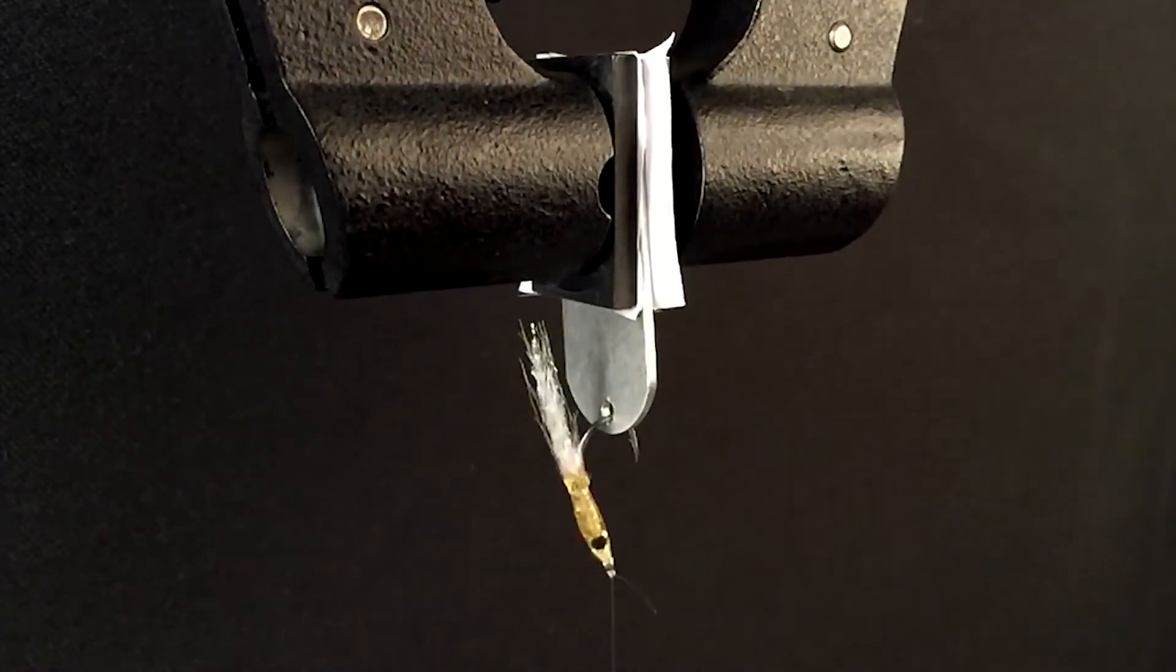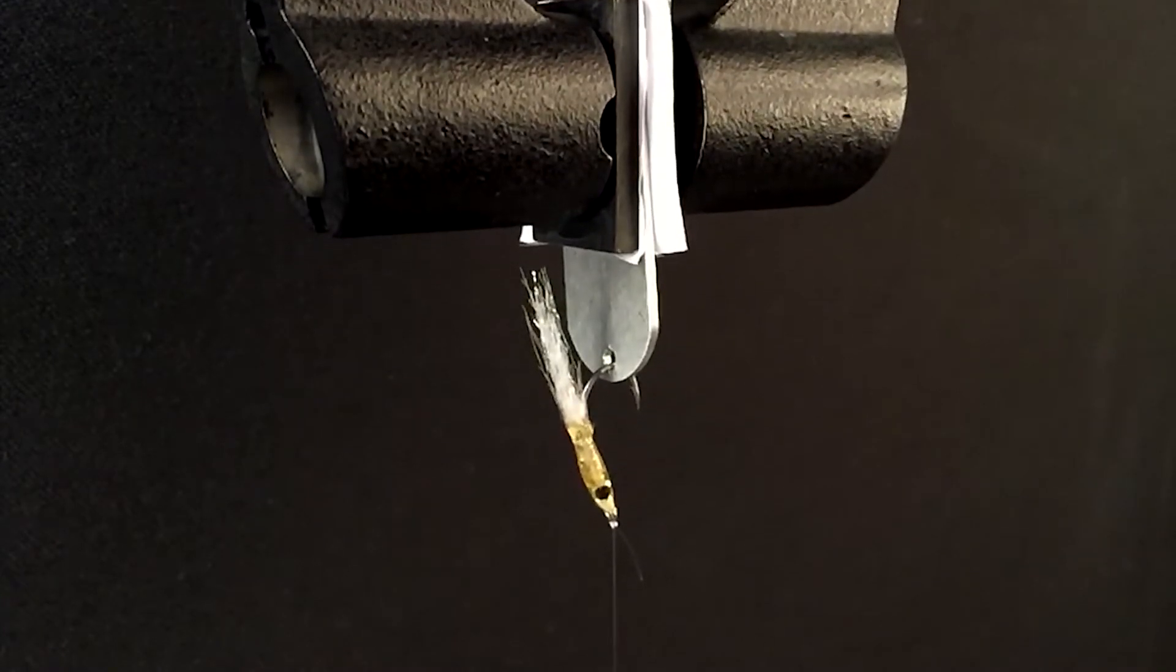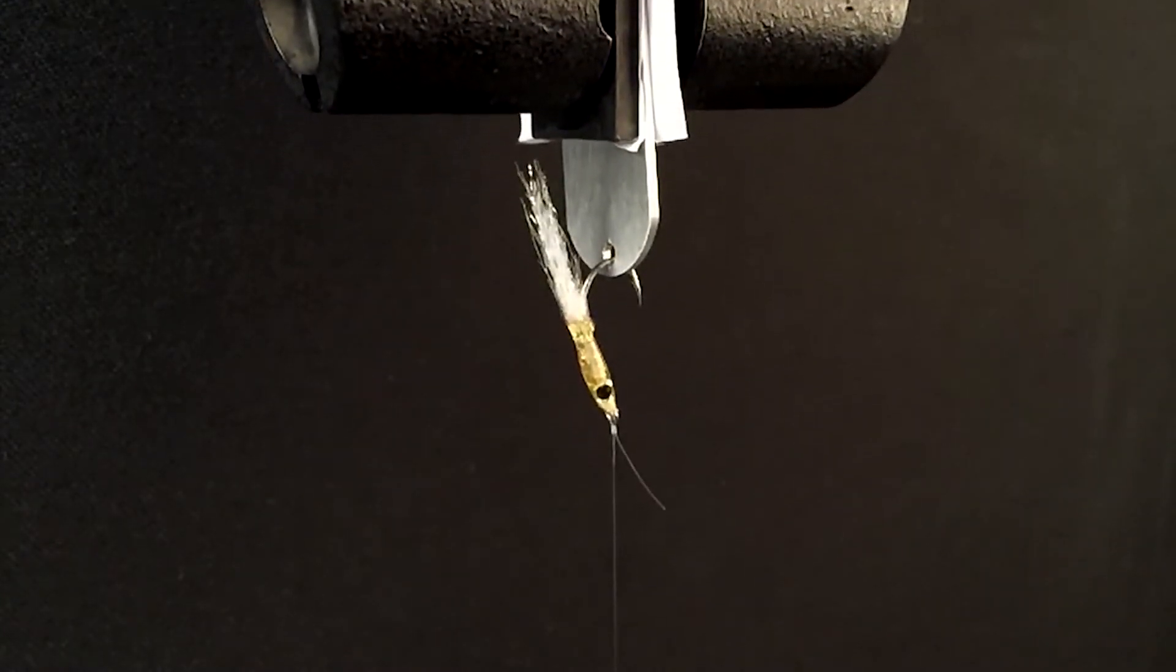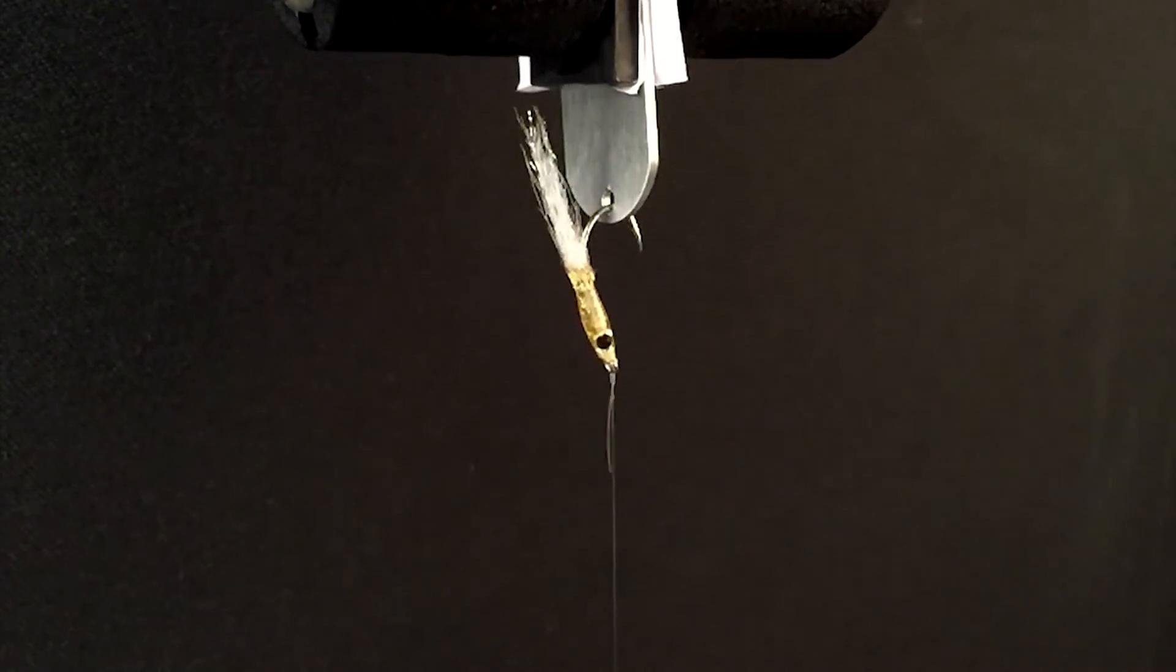The following knot was tied in a sample of Rio's 10-pound steelhead salmon tippet material and tested on our Instron machine to illustrate its relative breaking strength.